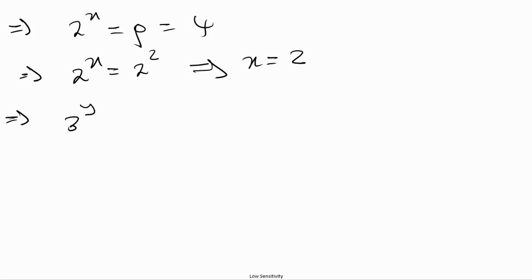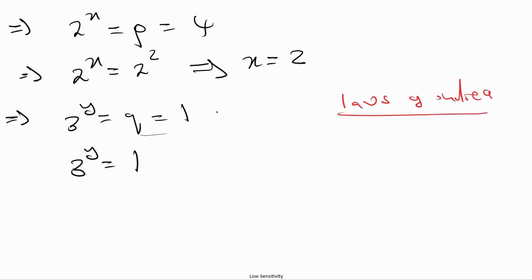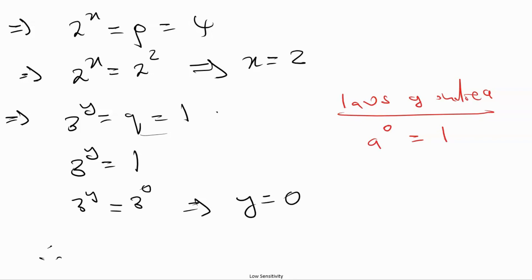For the second: 3^y = q = 1. We know from the law of indices that a^0 = 1, so 3^y = 3^0. Therefore y = 0. Our final solution is x = 2 and y = 0.